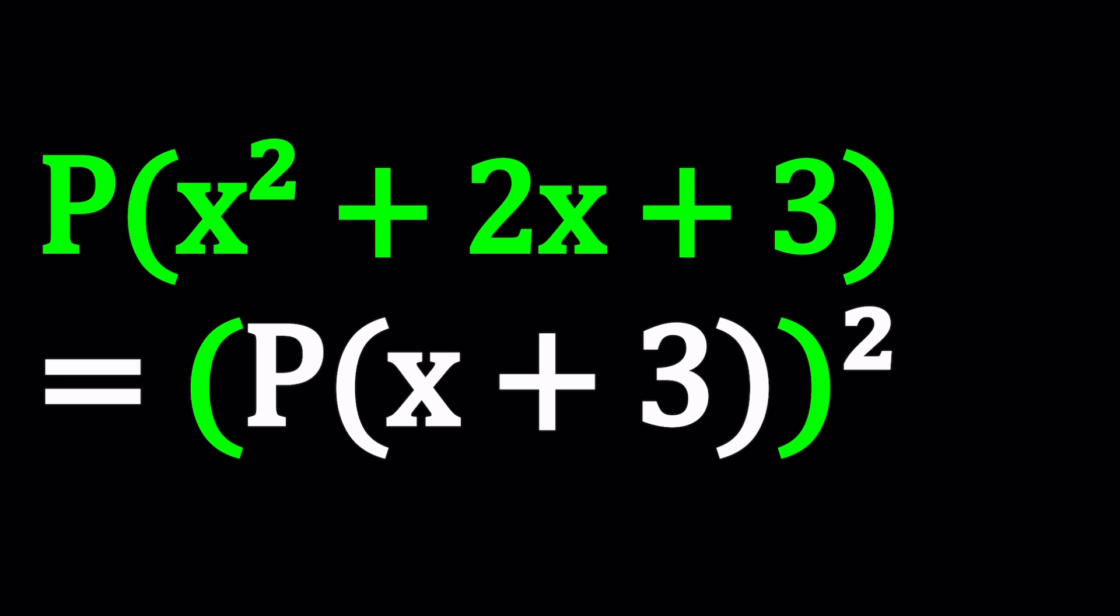First of all, I'm going to go ahead and take the quadratic expression here and write it as a perfect square, or in other words we're going to complete the square here. So I'm going to start with P(x² + 2x + 3). Notice that this can be written as x² + 2x + 1 plus 2, and this part is a perfect square. So we can write it as (x + 1)² + 2.